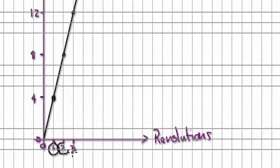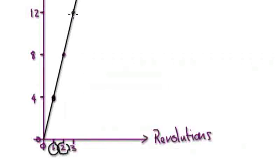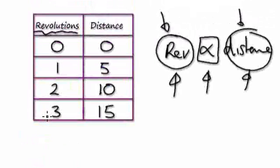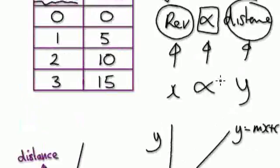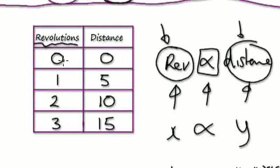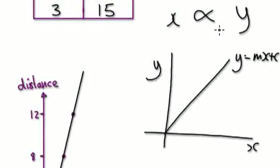Whenever you see that x is directly proportional to y, you can immediately jump to a graph where it will be a straight line. This is x, this is y, and whenever you see a straight line, it's y equals mx plus c. But when one thing is directly proportional to another, when you have zero revolution you have zero distance, when you have zero miles you have zero kilometers, when you have zero giraffe necks you have zero meters — so it passes through the origin. You can forget about the c here, and imagine it as y equals mx only.